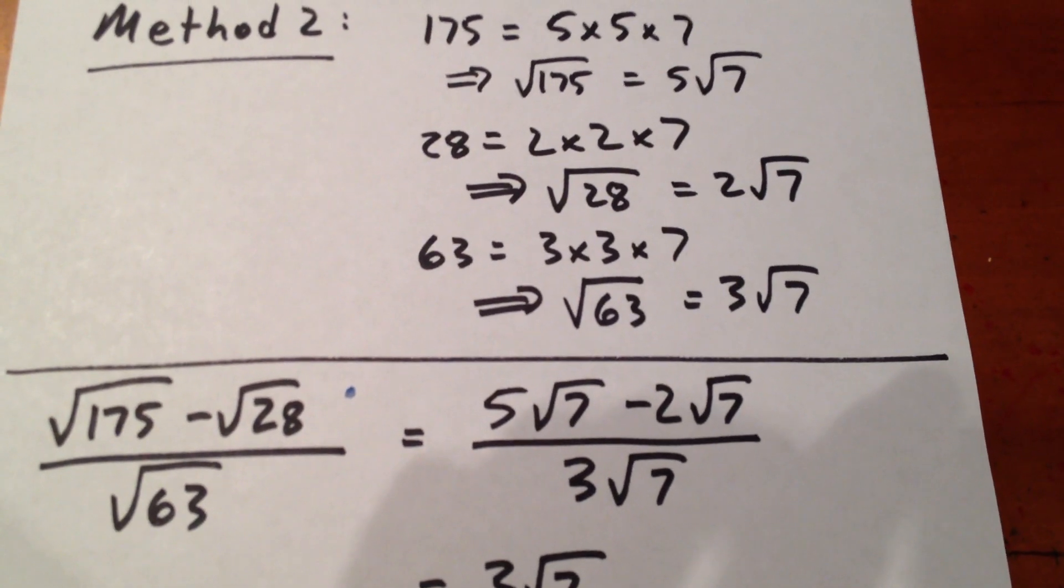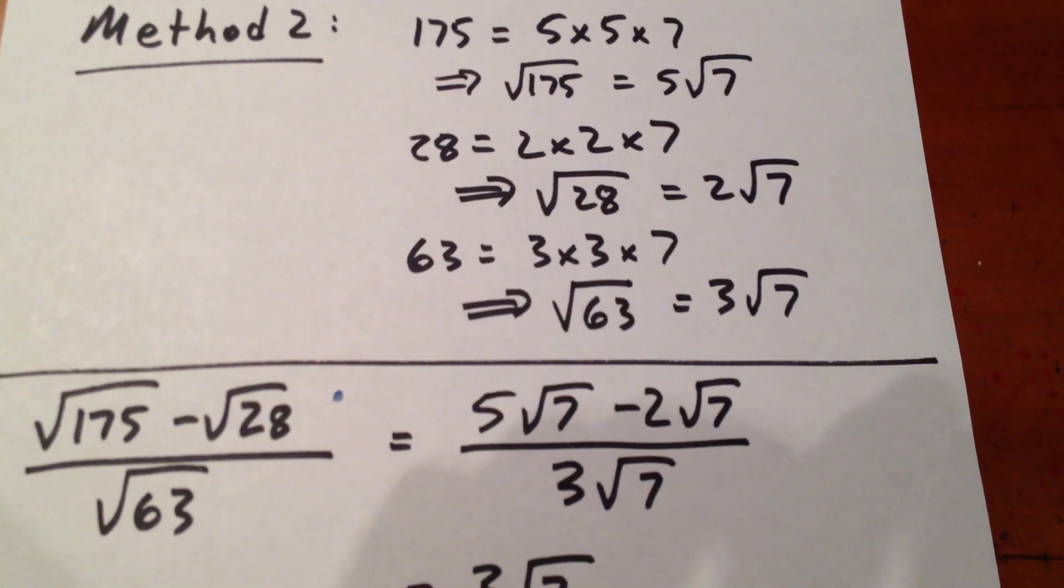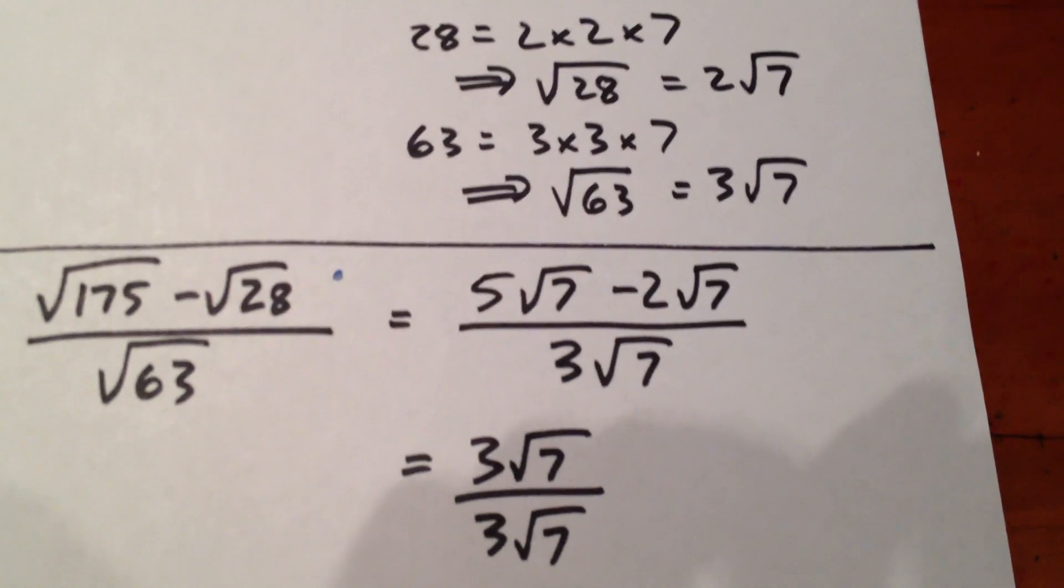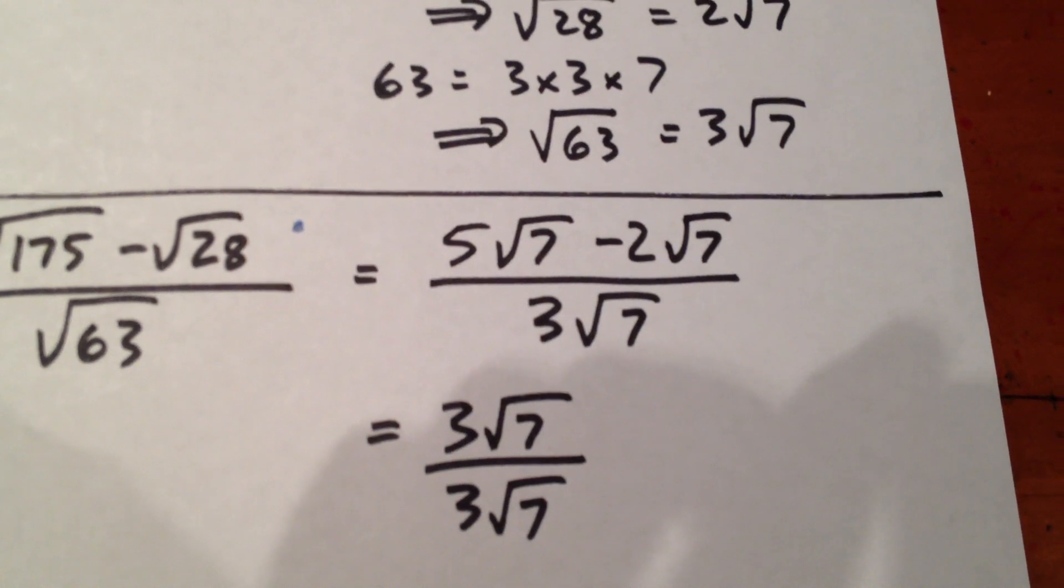Well, that numerator simplifies. Those are like terms, and what we have in the numerator is 3 root 7, and the denominator is 3 root 7.